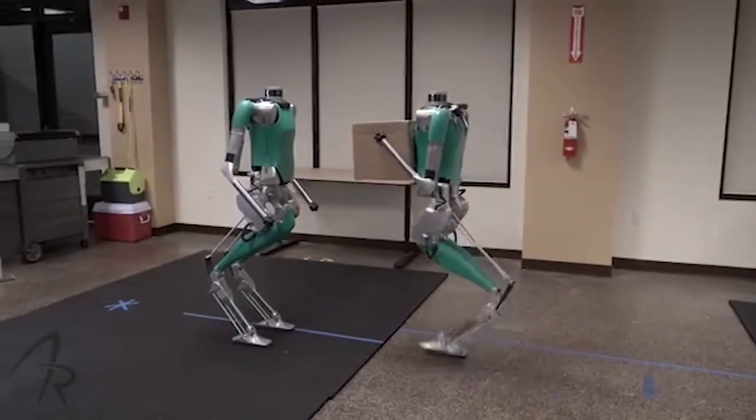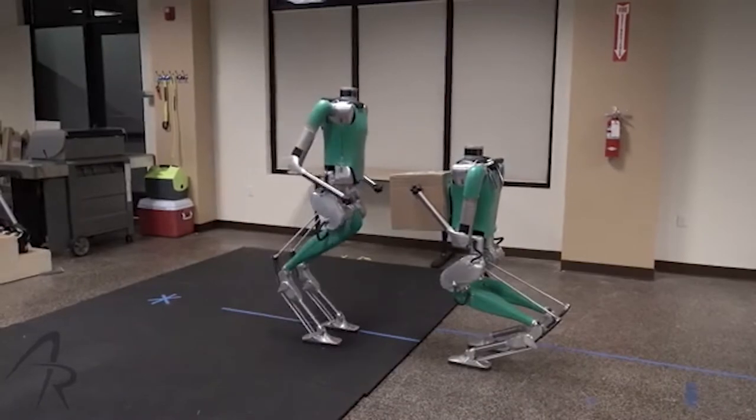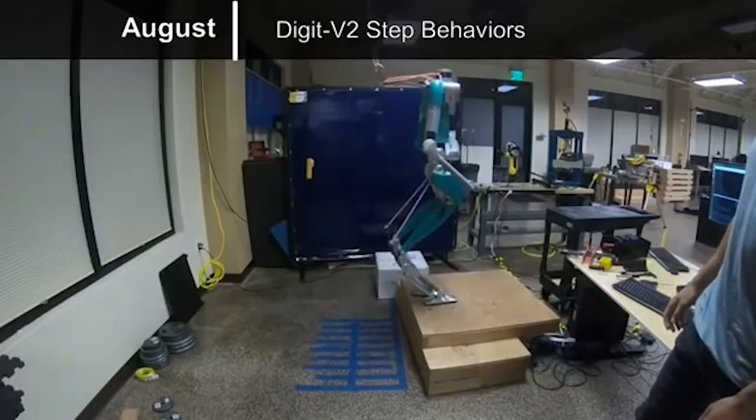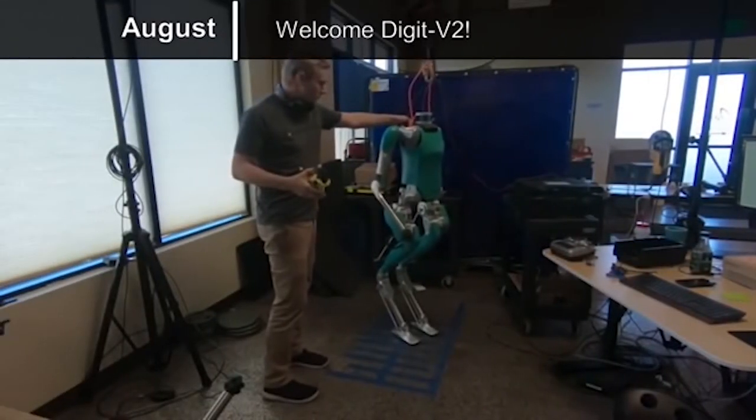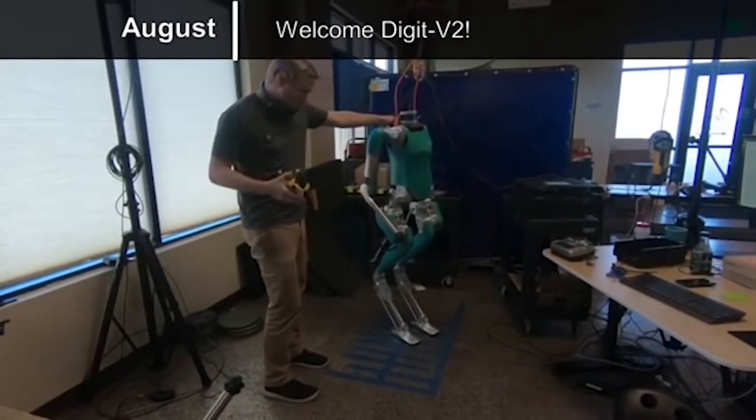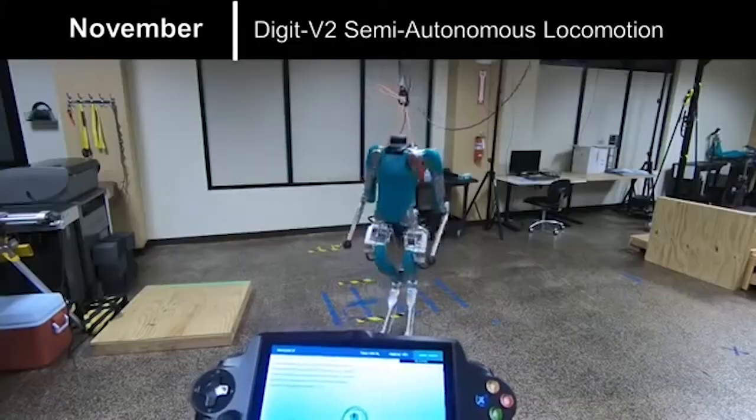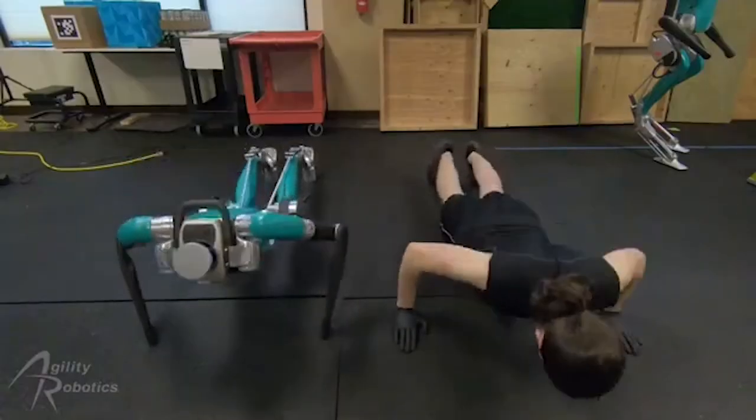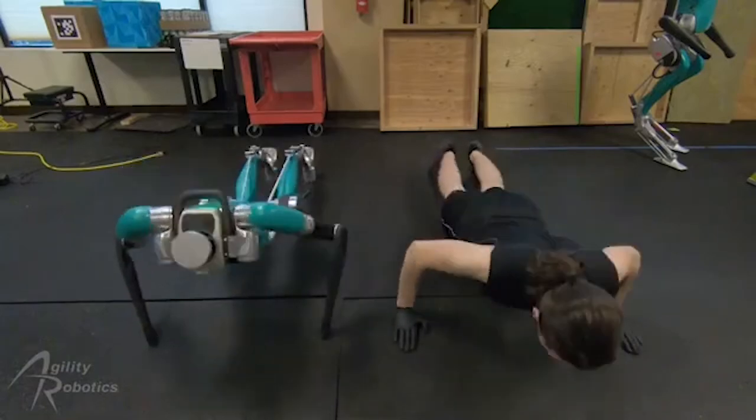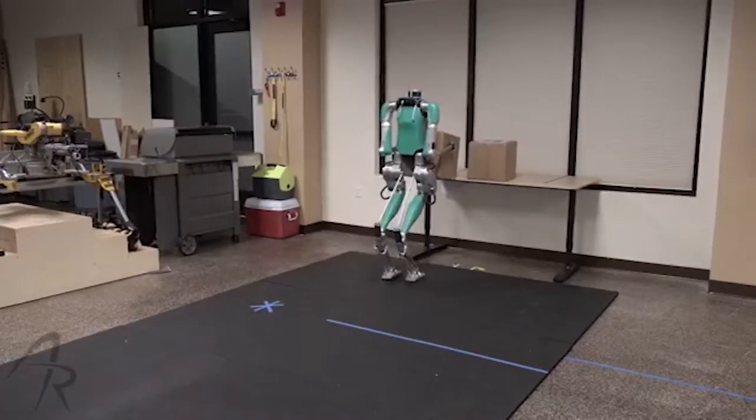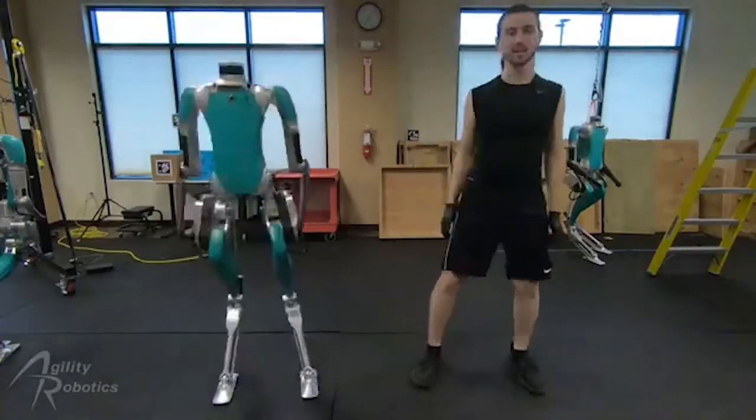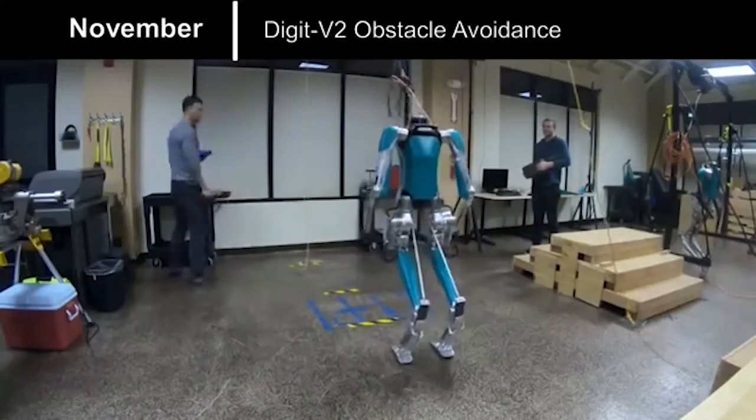In addition to the physical changes, the control system for Digit has been overhauled to enable advanced behaviors such as stair climbing and footstep planning, all controlled through a robust API that can be accessed both onboard the robot and via a wireless link. Furthermore, Digit's torso houses two multi-core CPUs, and a modular payload bay allows a third computer and a variety of possible form factors to support additional perception and reinforcement learning capabilities.